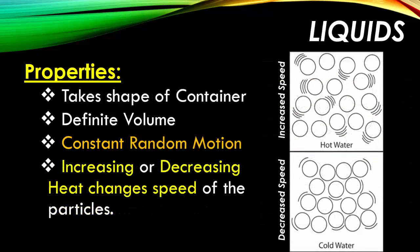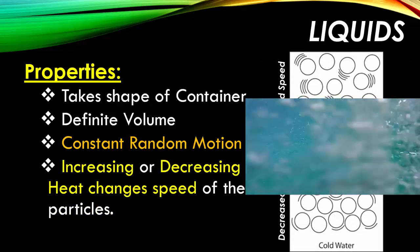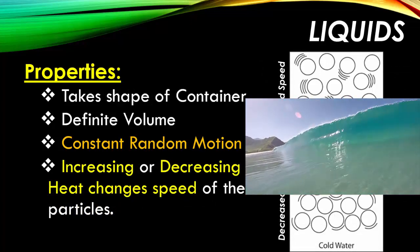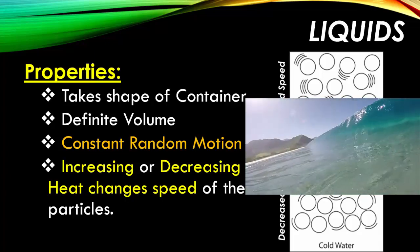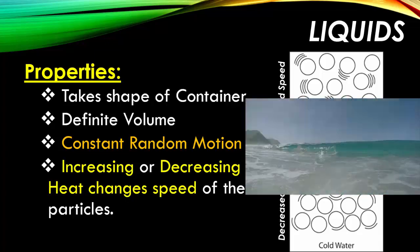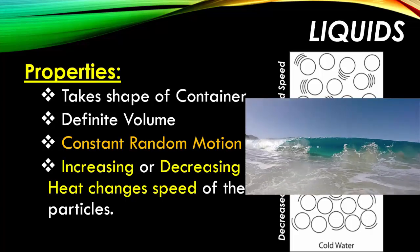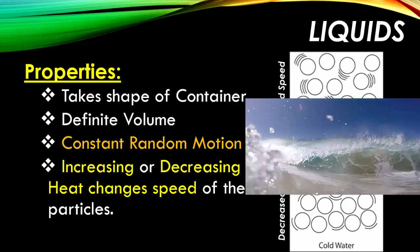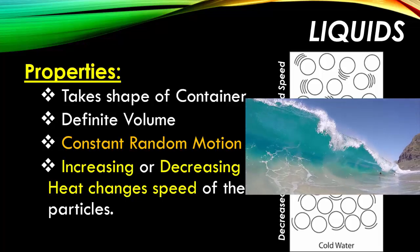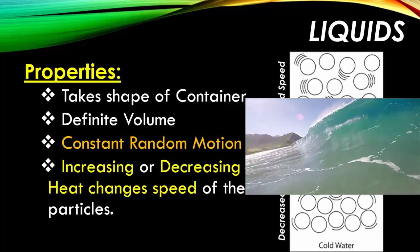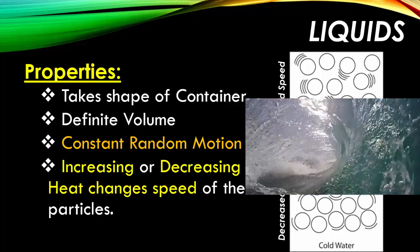Liquids are going to be the second phase of matter that we talk about. Liquids as we know take the shape of any container. They have a very definite volume. And the liquid molecules are constantly in a random motion. They are not going to be jam-packed next to each other like the solid phase. However, they can increase or decrease the kinetic speed of their particles depending on the heat changes that the particles are experiencing.